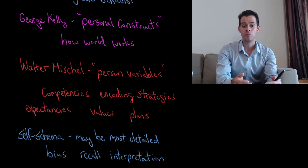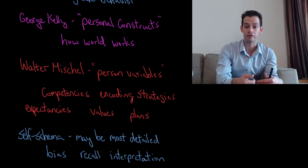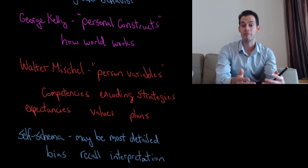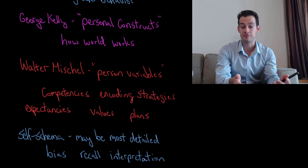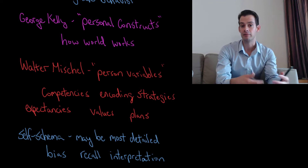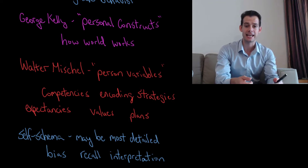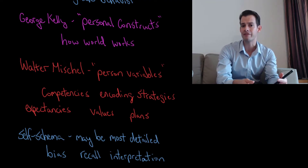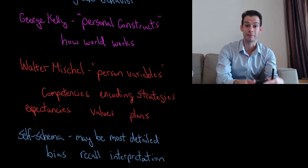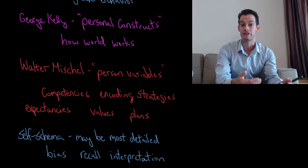When we think about our schema, we might think about our self-schema — this refers to our schema about our self. This is probably the most detailed schema that we have, because we have a great deal of experience thinking about and trying to understand our own behavior in relation to the world. This means we'll have a very complex schema related to understanding our self and interpreting our own behavior, which we might not have for other people. That can influence how we see ourselves versus how we might interpret somebody else's behavior, even if it was actually the same behavior.